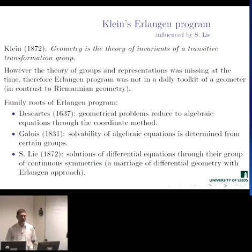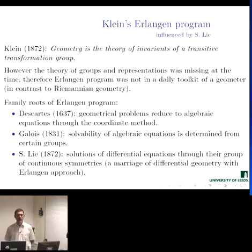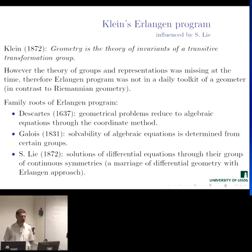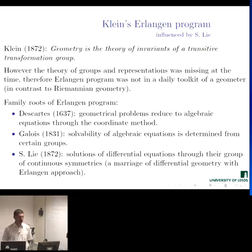That proposition served as a useful classification tool for geometries which would be developed using different approaches. In particular, one can now see the transition from Euclidean geometry — which investigates angles, distances, and similar things — to affine geometry, which investigates the behavior of straight lines and incidence, and then to projective geometry, and so on. This is done by modification of the corresponding group — from isometries of the plane, to affine transformations, to projective transformations of the plane.